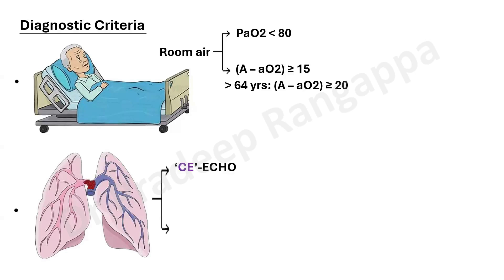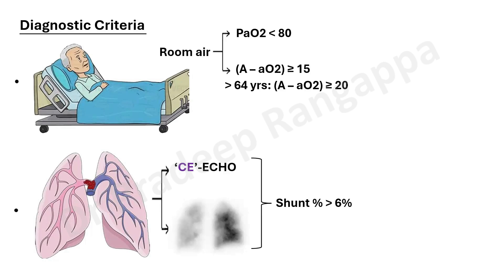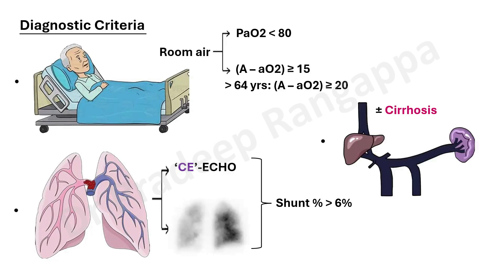Diagnostic tools include contrast-enhanced echocardiogram, but the simplest bedside tool is the agitated saline test, and radio-perfusion lung scans. Not all centers dealing with cirrhosis of the liver will have radio-perfusion availability. These tools can detect hepatopulmonary syndrome if the shunt fraction is more than six percent.